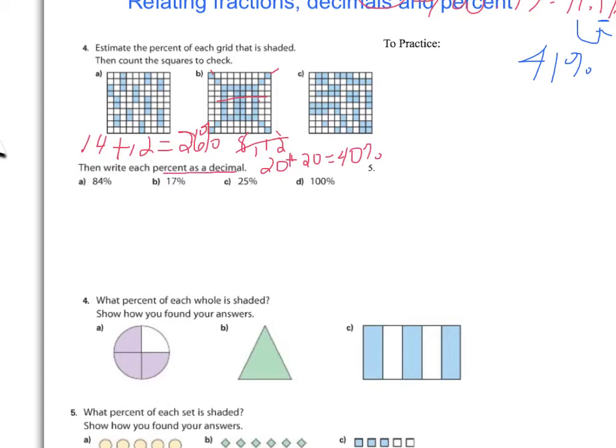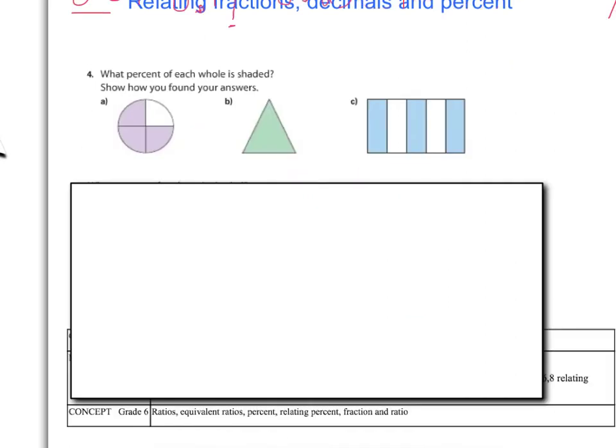Write each percent as a decimal. Well, 84%, we know we have to make it into hundredths, so it would be 84 hundredths, 0.84, and you do have to have the zero in front. 17% again would be 17 hundredths, 0.17, ending in the hundredths place. 25%, 25 hundredths, 0.25. And 100% actually becomes 1.00. That one can be a bit tricky.